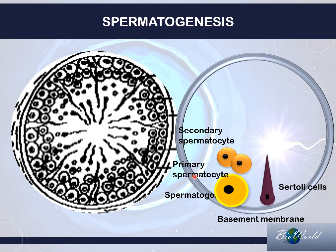Primary spermatocytes are diploid, whereas the secondary spermatocytes are haploid. The secondary spermatocytes will then carry out meiosis II to produce four spermatids. The number of chromosomes are the same as the number of chromosomes in the secondary spermatocyte, so the secondary spermatocyte is haploid and the spermatid is also haploid.